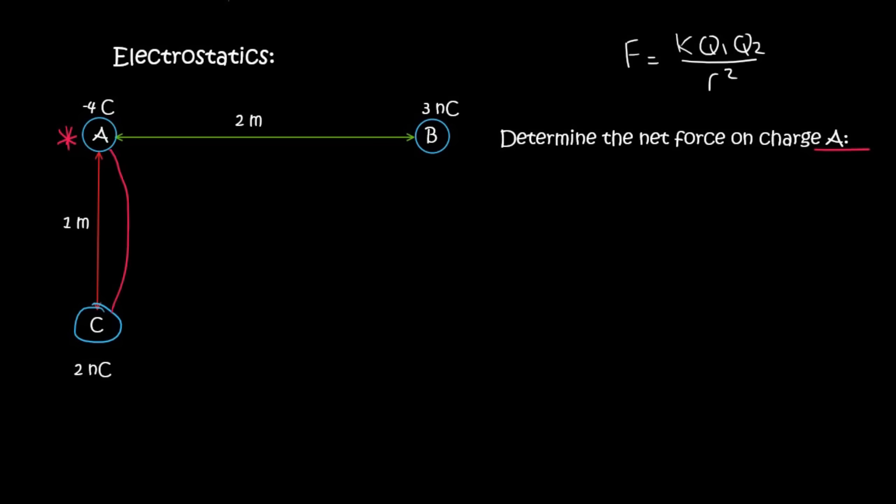So let's look at C and A first. So we'll go F_AC, and that's going to be K, or I can actually fill that in as 9 times 10 to the 9. Remember the formula is up here. The charge of A is just 4. We're not going to say negative 4. The charge of C is 2 times 10 to the minus 9.